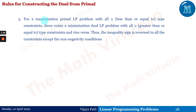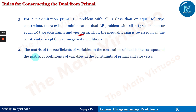Rule three: for a maximization LP problem with all less-than-or-equal-to constraints, there exists a minimization dual problem with all greater-than-or-equal-to constraints. So max with less-than becomes min with greater-than, and vice versa — if the primal is minimization, the dual becomes maximization. The inequality sign is reversed in all constraints except the non-negativity conditions. Also, the matrix of coefficients of variables in the dual constraints is the transpose of the matrix of coefficients in the primal constraints.